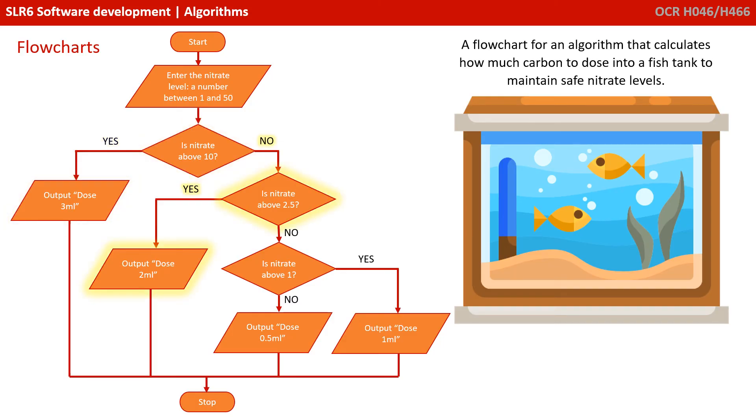If not, is nitrates above 2.5? And if they are, output 2 mils. And if they're not, is the nitrates above 1? And if it is, dose 1 mil. And if it's not, dose half a mil before coming to a stop.